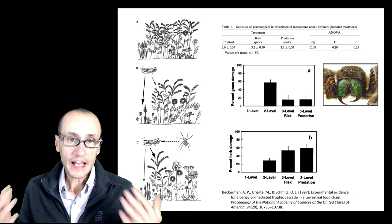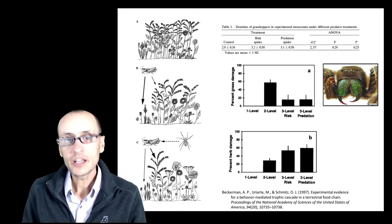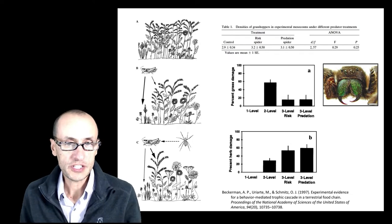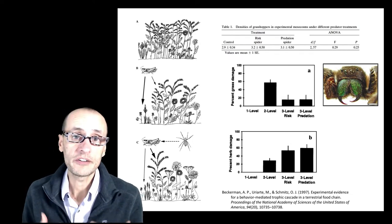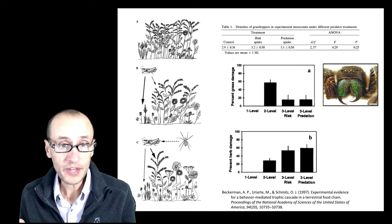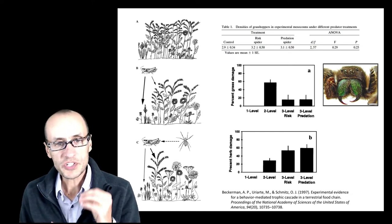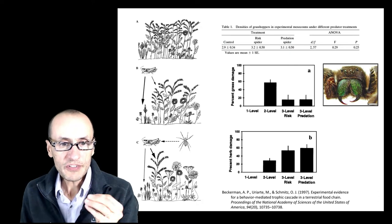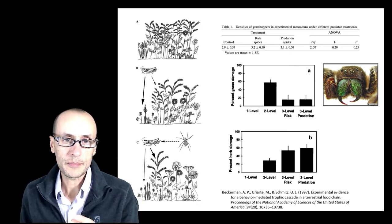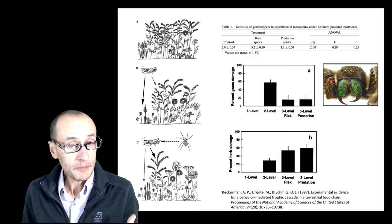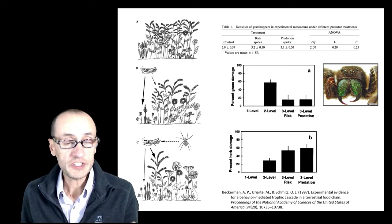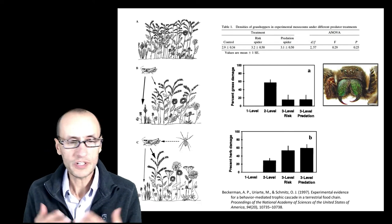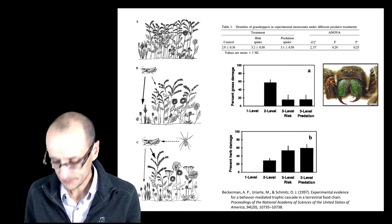Now, classical trophic cascade theory would tell you that when there's spiders around, you should have fewer herbivores and that should lead to a change in the amount of biomass of the plants in these communities. But what Schmitz noticed was that sometimes, even in the presence of the main herbivore, the grasshoppers here, there seemed to be a shift in the plant communities and in the biomass in these communities. So he asked himself, what's going on?